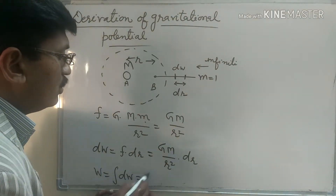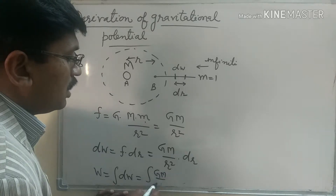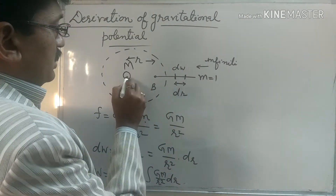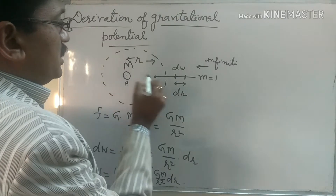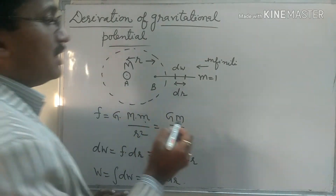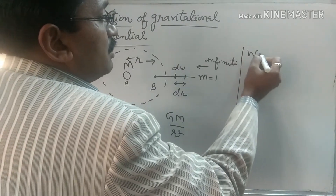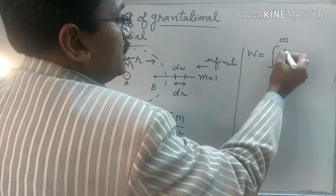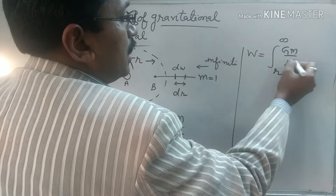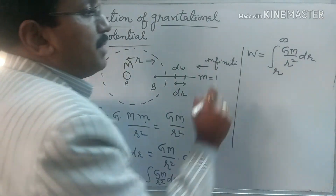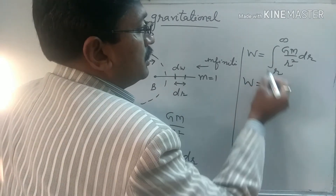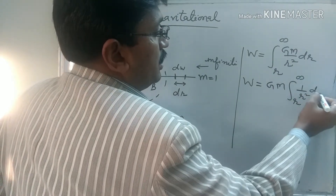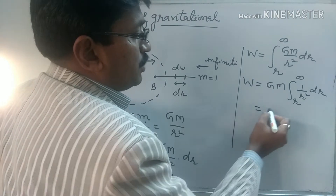Now if we want to determine the total work done, it should be the integration of dW, or the integration of GM upon r squared dr. The separation from the body ranges from small r to infinity, so the limit of integration is from small r to infinity of GM upon r squared dr. Since GM is constant, that becomes GM times the integration from small r to infinity of 1 upon r squared dr, and the integration of 1 upon r squared gives GM times minus 1 upon r.